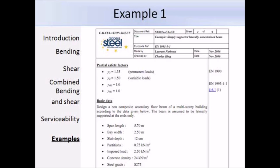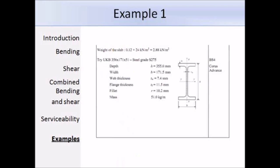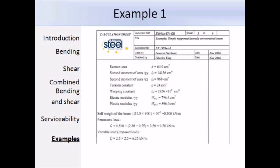In this slide, we have some more section properties. We're using a 356 times 171 times 51 beam, and grade S275 steel. There are some more section properties, and at the bottom, the permanent and variable loads have been marked out.